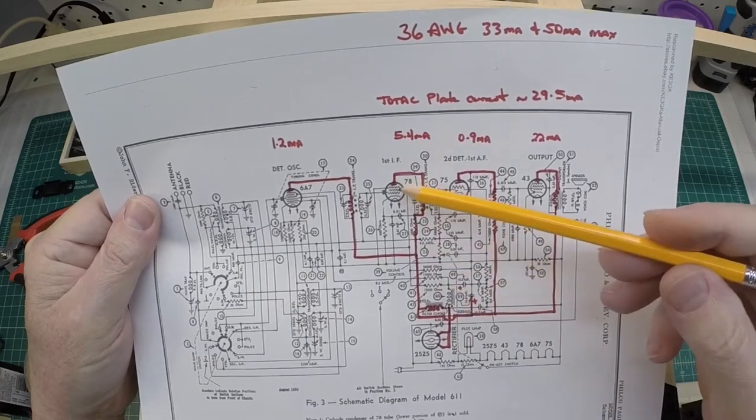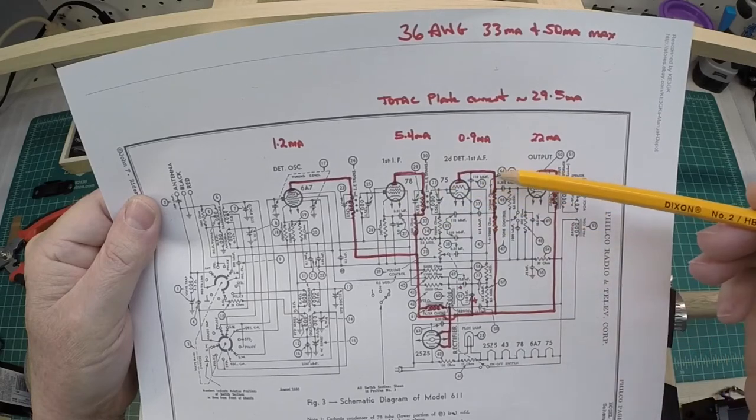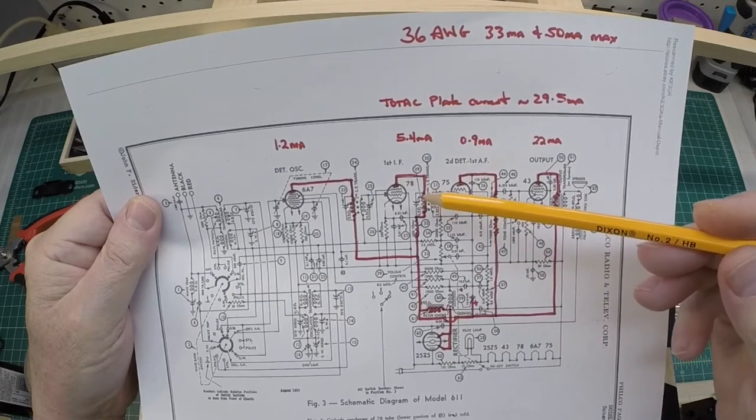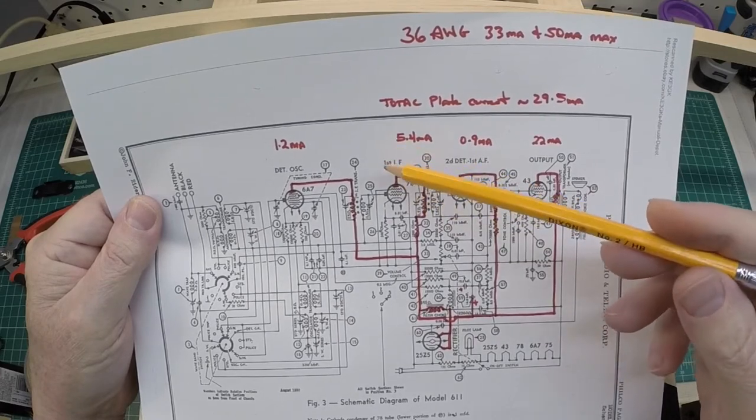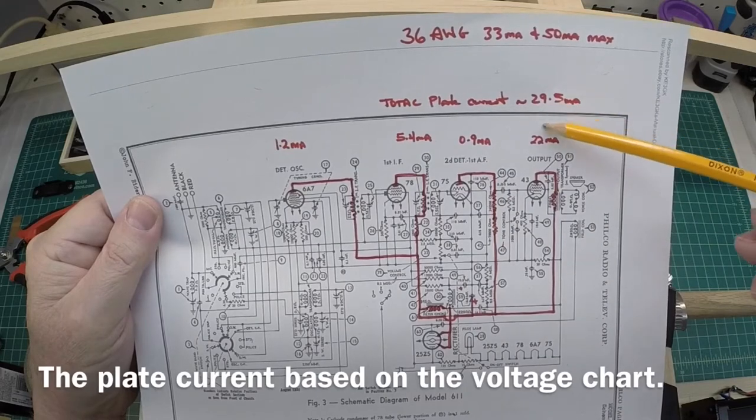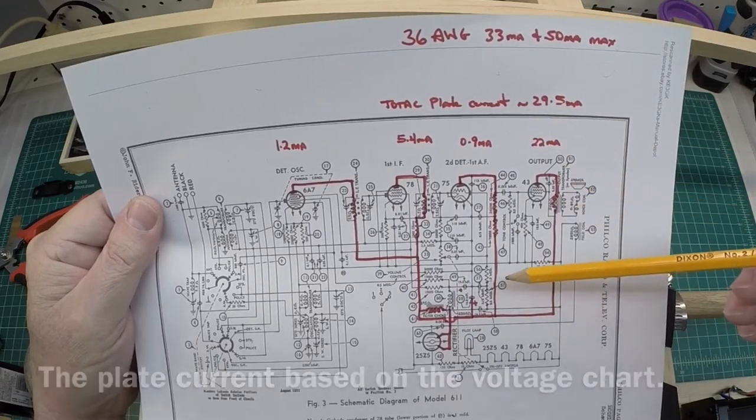You can see it feeds the plate to the 6A7, 78, 75, and 43 tubes. So I went back to the tube manual and just pulled the specs and looked at the plate current. And I have those summed up here at just under 30 milliamps of current.